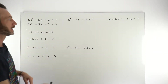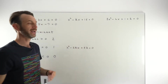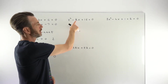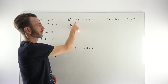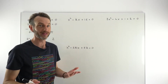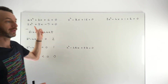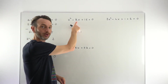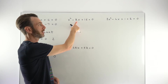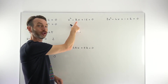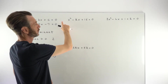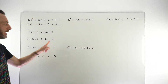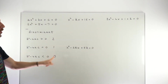In this problem type, you're given a quadratic equation with what's called an undetermined coefficient — usually the letter k. This is what we're trying to find. We're given the quadratic equation along with information about its roots or solutions, and we solve for the k value.